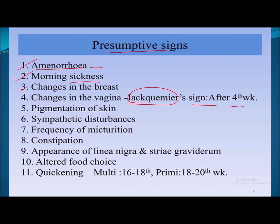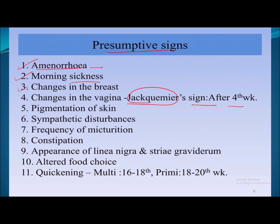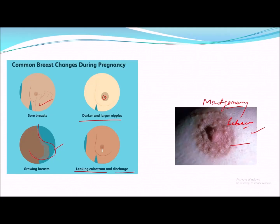There are also vaginal changes. This sign is known as Chadwick's sign, seen after four weeks, where the color of vaginal mucosa changes from pink to violet as a result of venous obstruction. This sign is also known as the Jacquemier sign.